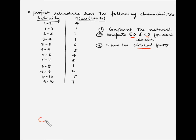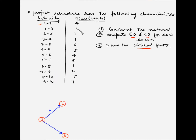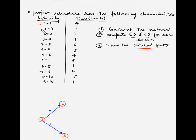This is node 1 and this is node 2. So we have activity 1-2 which takes 4 weeks. The arrow in blue color represents the activity 1-2 and it takes 4 weeks for completion. So we have drawn 1-2. Now next is 1-3. So 1 is preceding event number 3. Let us draw event number 3 and the activity 1-3, which takes 1 week to complete. So we have completed 1-3.